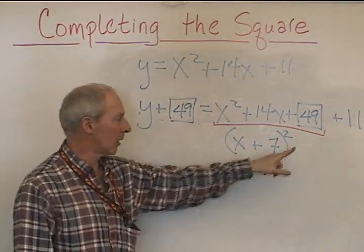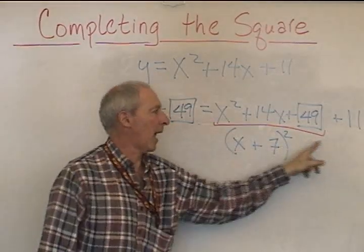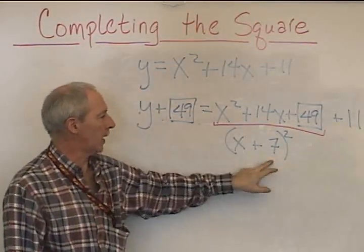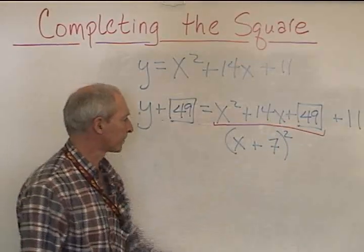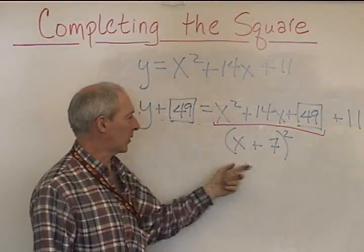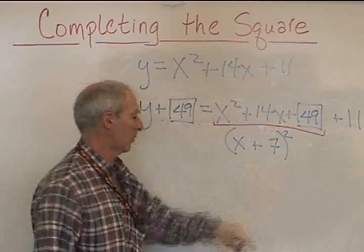Just make sure you are not confusing yourselves by adding two numbers that are no longer related. The 49 is right here at 7 squared. Three terms for the trinomial turn into the perfect square binomial.